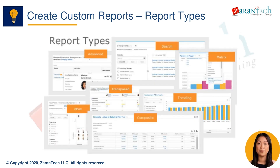Simple reports allow you to select fields, sort, and filter on a single object. Analytic reports allow aggregation such as count, sums, and averages on fields. Matrix reports allow you to generate pivot table-style reports for comparisons. Finally, advanced reports provide the most flexibility through the use of advanced reporting expressions.